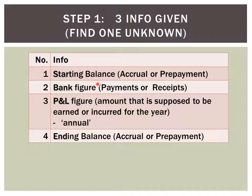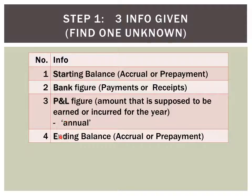The second is the bank figure — this could be a payment or a receipt. Payment would be for expenses, receipt would be for income. Third, you have the P&L figure — P&L stands for profit and loss — which is the amount supposed to be earned if it's income, or the amount supposed to be incurred if it's an expense, for the year. The word 'annual' also suggests a P&L figure. Lastly, the ending balance, which could also be an accrual or a prepayment.